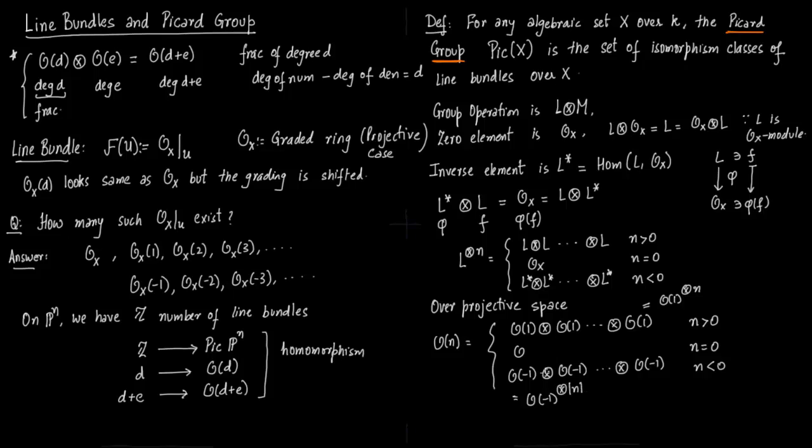First notice that if you tensor O(1) with O(-1), 1 minus 1 will give you 0. So basically O(1) tensor O(-1), they are dual to each other. You end up back in O. So now we see it more concretely. You want to go from O(1) to O. How would you go?